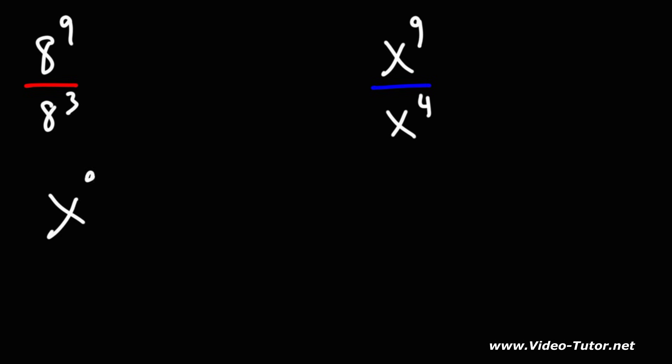So here's a formula that you want to keep in mind. Let's say if you have x to the a over x to the b, the base x will remain the same. But the result is you need to subtract the exponents, the top exponent minus the bottom exponent.